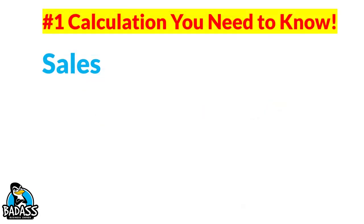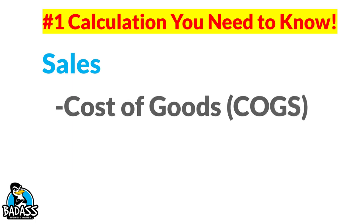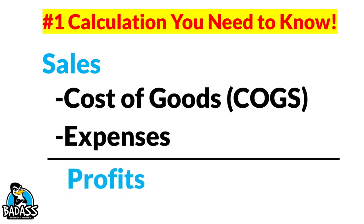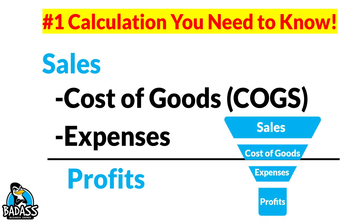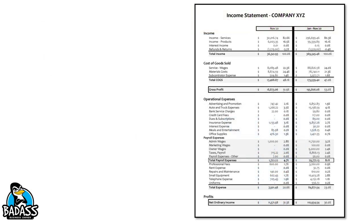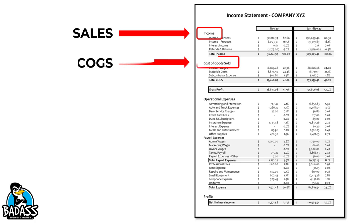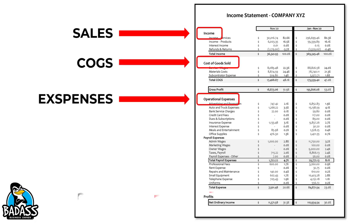The key calculation to memorize — and if you've been following me, I preach this all the time — is: sales minus cost of goods minus expenses equals your profits. This is important for your pricing, and more importantly for your profit and loss. And notice that it follows the sales funnel. On your profit and loss, sales is known as income, then you have cost of goods, then expenses, and finally profits. Your profit and loss statement follows that same calculation.